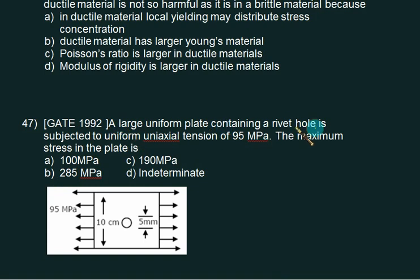A large uniform plate containing a rivet hole subjected to uniform uniaxial tension stress of 95. Always remember whenever he gives this stress he is always on big section. So this value of sigma is given to us 95. For circular hole its KT is always equal to fixed 3 value. Is it equals to sigma max divided by sigma. So 3 multiplied by 95 is 285.